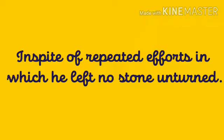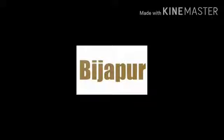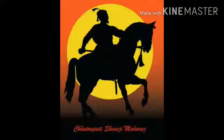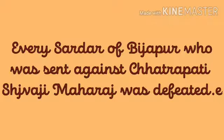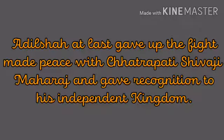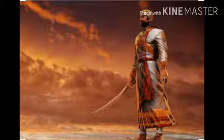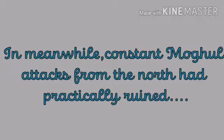In spite of repeated efforts in which he left no stone unturned, Adil Shah of Bijapur could not force Chhatrapati Shivaji Maharaj to surrender. Every sardar of Bijapur who was sent against Chhatrapati Shivaji Maharaj was defeated. Adil Shah at last gave up the fight, made peace with Chhatrapati Shivaji Maharaj, and gave recognition to his independent kingdom. Chhatrapati Shivaji Maharaj thus had peace for some time on his southern border.